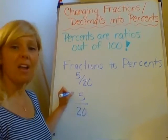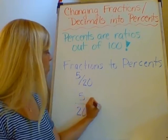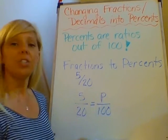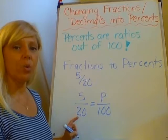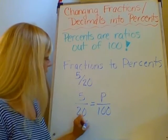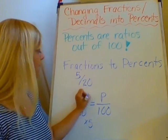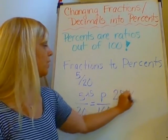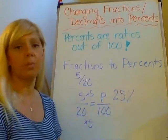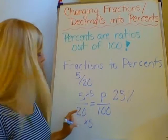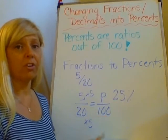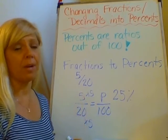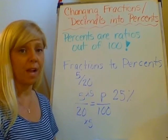So 5 out of 20 is equivalent to what out of 100? We know that 20 times 5 is 100. So 5 times 5 would give us 25%. If we don't know how many times 20 goes into 100, we can always do 100 times 5 and divide it by 20 to end up getting 25.